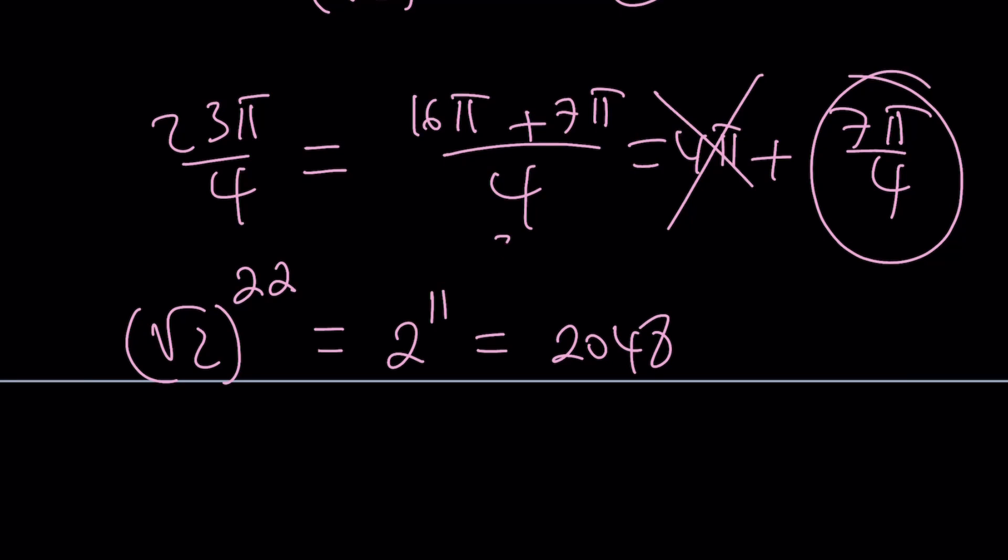What is root 2 to the power 22? That is just 2 to the power 11, and that is 2048. How do I know that? Because I memorized 2 to the 10th power, which is 1024. You get the idea.